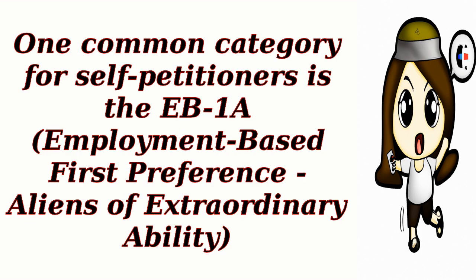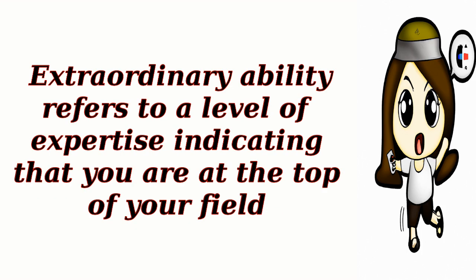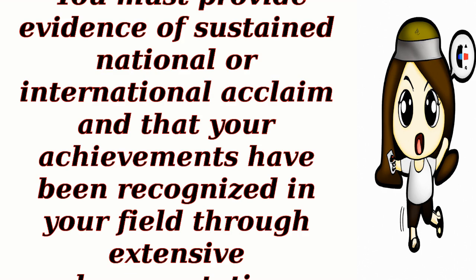One common category for self-petitioners is the EB-1A, Employment-Based First Preference, Aliens of Extraordinary Ability. To qualify for this category, you must demonstrate extraordinary ability in the sciences, arts, education, business, or athletics. Extraordinary ability refers to a level of expertise indicating that you are at the top of your field. You must provide evidence of sustained national or international acclaim and that your achievements have been recognized in your field through extensive documentation.